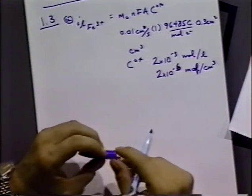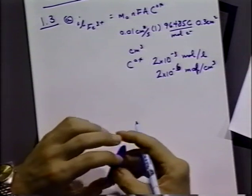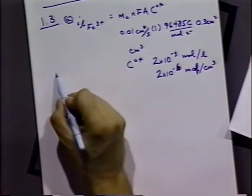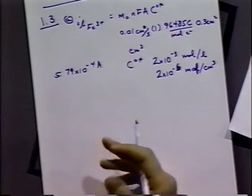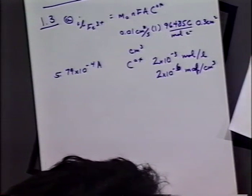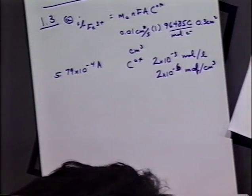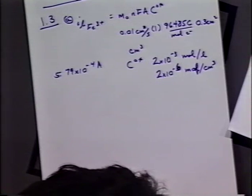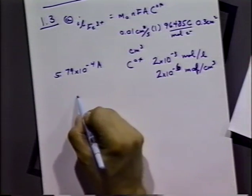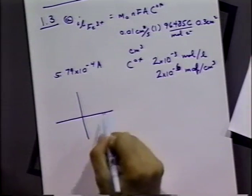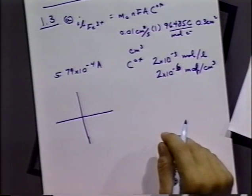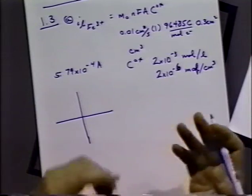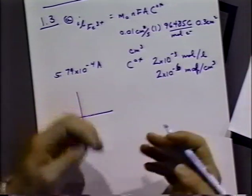The answer for part A is 5.79×10⁻⁴ amps, and you can do the same calculation for tin. Part B asks for a current-potential scan from +1.3 to −0.4 volts under the above conditions — make a labeled, quantitative, correct sketch using the given concentrations and standard potentials from the back of the book, assuming mass-transfer-controlled reactions and Nernstian behavior.